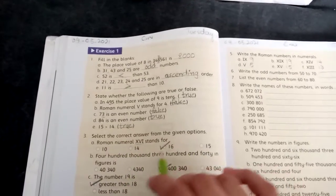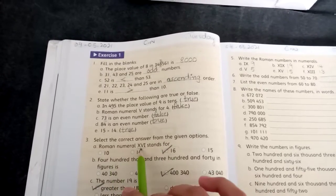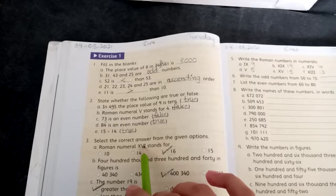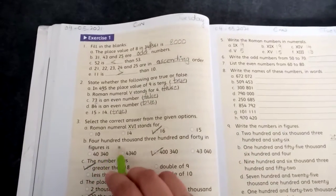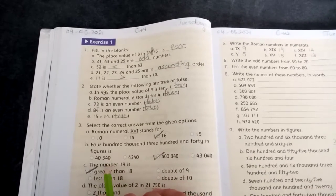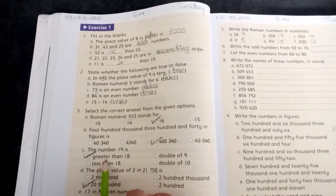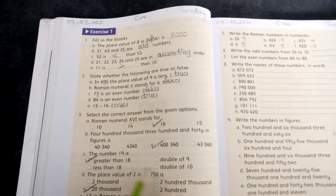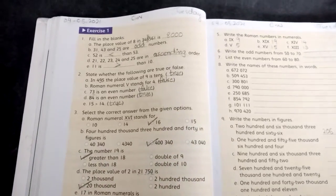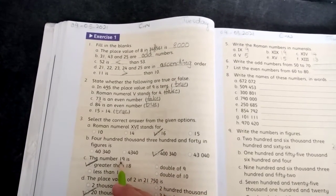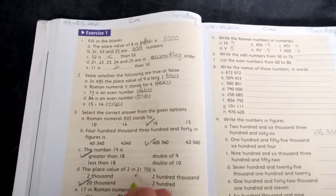Next dekhe, question number 3. Write the correct answer from the given options. Roman numbers kaise dekhne ke. A part, Roman numerals XVI stands for dash. X to 10 ho gaya, VI 6 hota hai, 10 plus 6, 16. 16 is answer. B: 400, 340 in figures. 400, 340, to 400,340 answer. The number 19 is, 19 kya hai, greater than 18, less than 20, double of 10. Greater than 18.